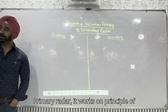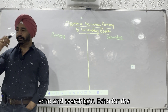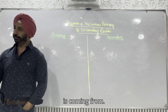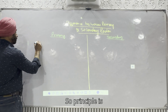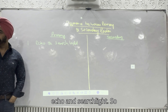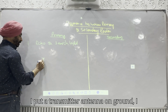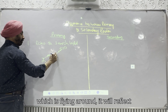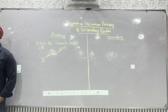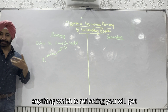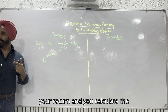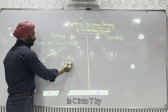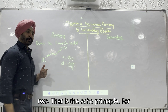Primary radar works on the principle of echo and searchlight. Echo is for range and searchlight is for bearing information — which direction the return is coming from. So the principle is echo and searchlight. I put a transmitter antenna on the ground, I send a pulse, it goes, and if anything is flying around it will reflect back the energy and you get the return. You calculate the distance: velocity equals distance upon time, so distance is c × t / 2. That is the echo principle.